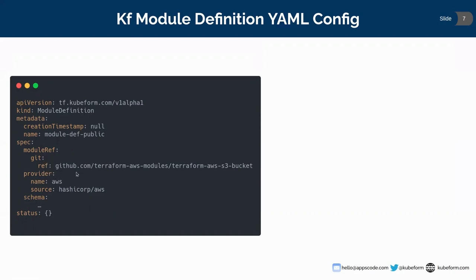Module ref stores the reference of the GitHub, Bitbucket, or GitLab repository where the Terraform module configuration is stored — under spec.module ref.git.ref. Under spec.provider, we have the name of the provider and the source, as given in the Terraform required providers block. Under spec.schema, it contains the schema of all input and output variables defined in the Terraform module, used for validation purposes when creating QFM module custom objects.